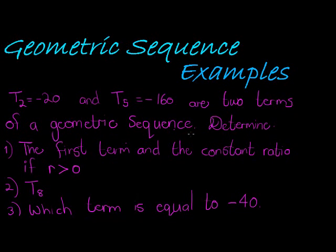Let's start with this typical example. Term 2 is equal to negative 20 and term 5 is equal to negative 160, and they are two terms of a geometric sequence. Determine: